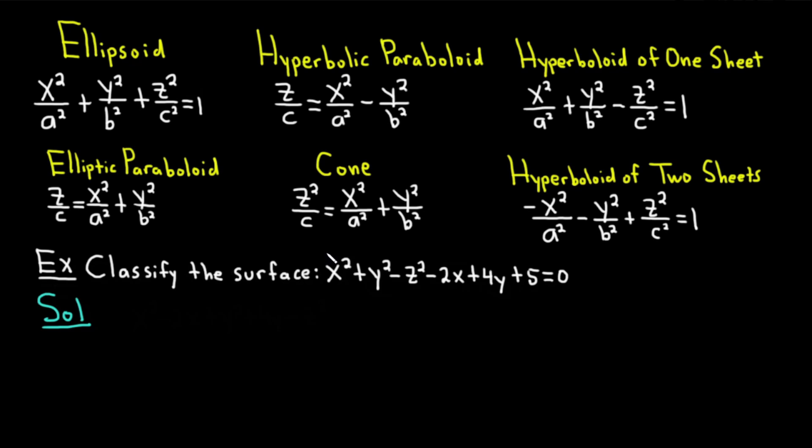So in order to complete the square, we're going to group together all of the x terms. So here we have x squared and here we have minus 2x. Let's write those down. So x squared minus 2x. Now let's go to the y terms. We've got y squared and a 4y. That's plus y squared plus 4y.